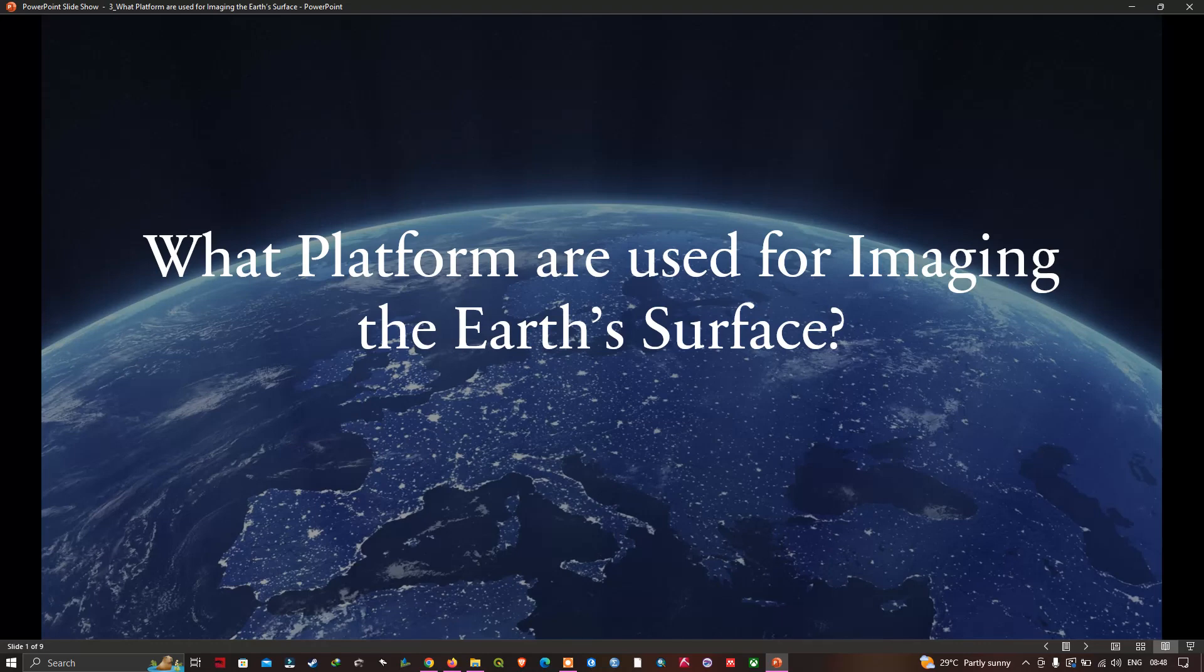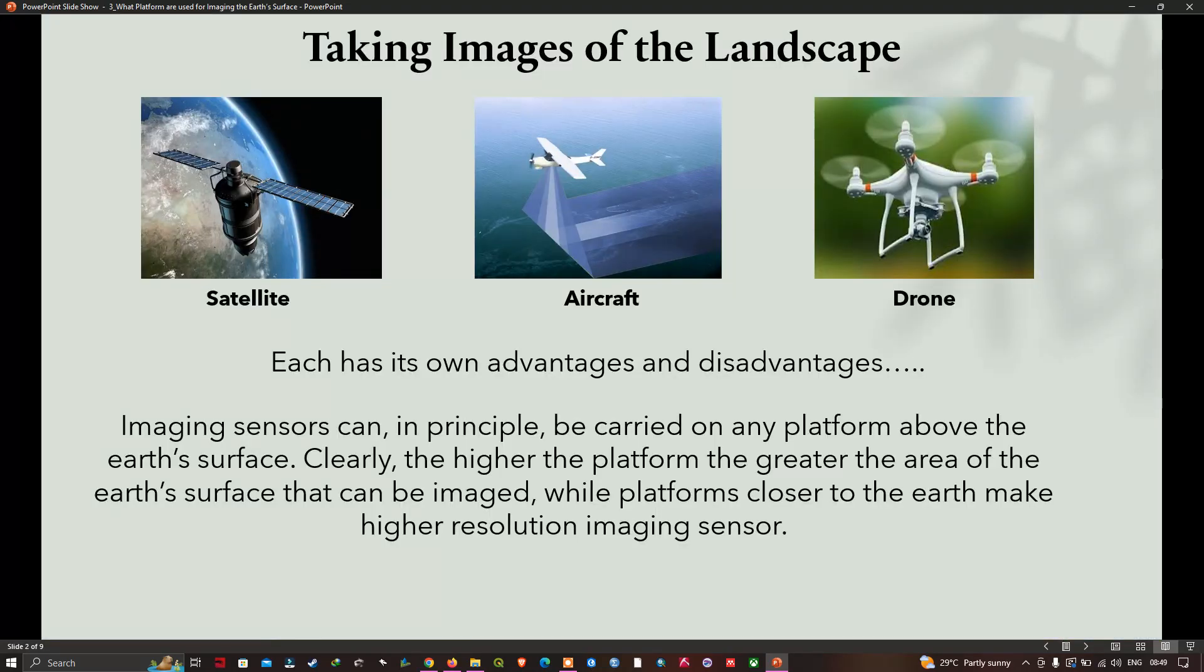In this video we will say a little about each platform type, concentrating on satellites since their orbital characteristics are quite specific to the need for operationally monitoring the globe. There are several differences among spacecraft, aircraft and drones for imaging. The most obvious is that the further one is from the earth, the greater the area that can be imaged.